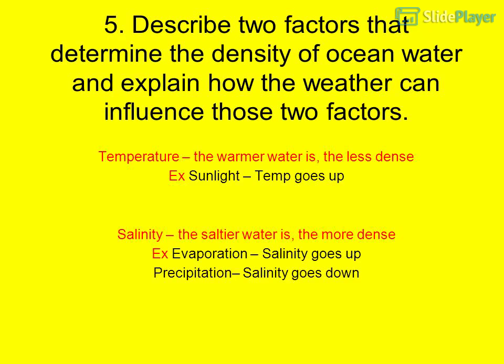Question 5: Describe two factors that determine the density of ocean water and explain how weather can influence those factors. Temperature: the warmer water is, the less dense it is. Sunlight causes temperature to go up. Salinity: the saltier water is, the more dense.